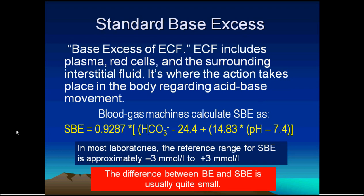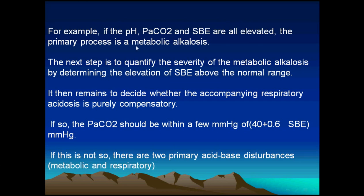Here is a good example: if pH, partial pressure of carbon dioxide, and standard base excess are all elevated, before discussing any ABG we should know the clinical state of the patient. From these values, the increase in pH, increase in partial pressure of carbon dioxide, and increase in standard base excess indicate a primary process of metabolic alkalosis. Although CO2 increases would normally decrease pH, here pH is elevated — confirming metabolic alkalosis. The standard base excess tells you how much the bicarbonate exceeds normal.